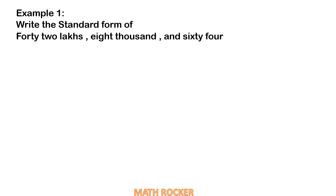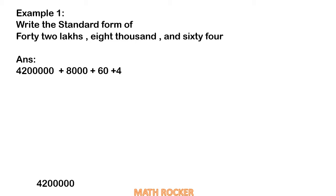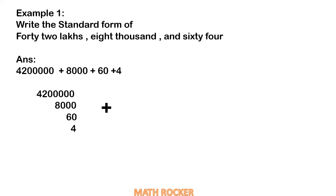Example 1: write the standard form of 42,08,064. In this sum, the numbers are given in words. We have to change them into numbers: 42 lakhs plus 80,000 plus 60 plus 4. Adding everything together, we get 42 lakhs 8,064.